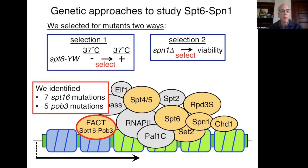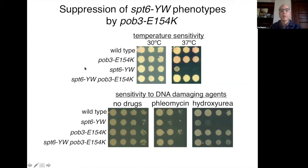Now I'm going to show examples of suppression by one of our strongest suppressors, a mutation in Pob3. These are dilution spot tests where we dilute yeast strains and grow them under permissive or non-permissive conditions. Looking at the temperature-sensitive effect: SPT6-YW causes temperature-sensitive growth at 37°C, and this is strongly suppressed by the Pob3 mutation. We also looked at sensitivity to DNA-damaging agents.